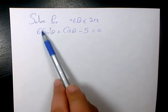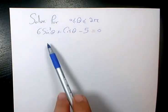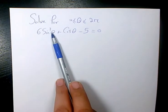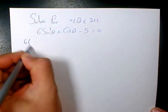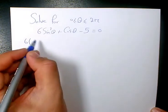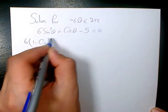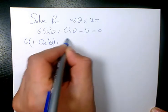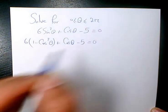Here I have sine squared theta and here I have cosine theta, so I need to convert sine squared theta to cosine. We know sine squared plus cosine squared equals to 1 always. So instead of sine squared theta, I will write 1 minus cosine squared theta, giving us 6 times (1 minus cosine squared theta) plus cosine theta minus 5 equals to 0.